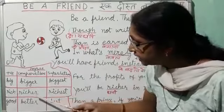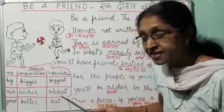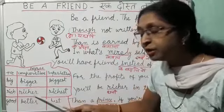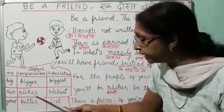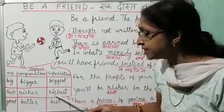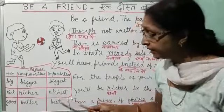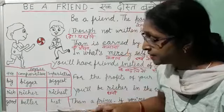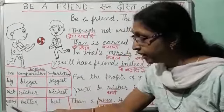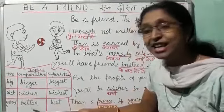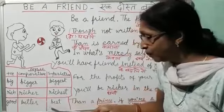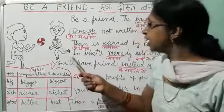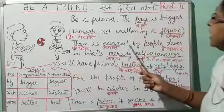Rich, richer, richest. Rich means dhani, richer means kisiki apeksha dhani, aur richest means sabse dhani. Good, better, best — acha, kisiki apeksha acha, aur best means sabse acha. Chaliye, phir chalte hain hum log kavita ke ghar mein.